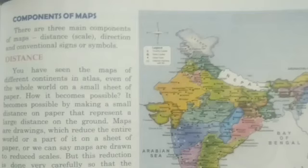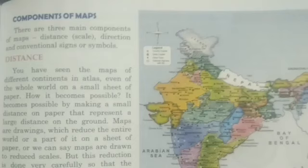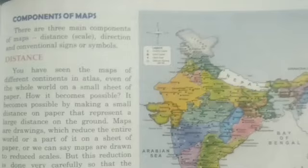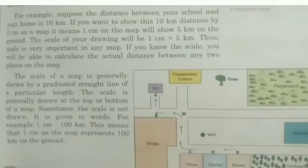The scale is generally drawn at the top or bottom of a map. Sometimes the scale is not drawn but is given in words — for example, one centimeter represents 100 kilometers. This means that one centimeter on the map represents 100 kilometers on the ground. Representative Fraction (RF) is another method of showing scale on a map. In this method, the ratio between the map distance and the ground distance is given as a fraction whose numerator is always one.